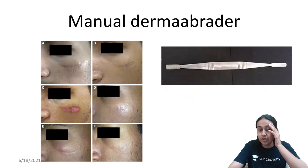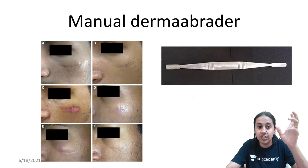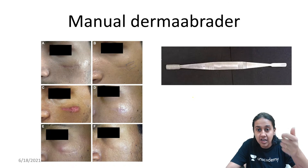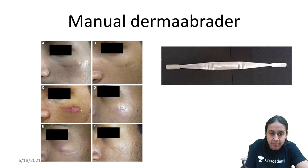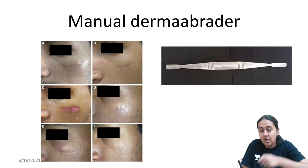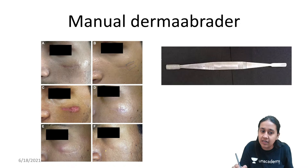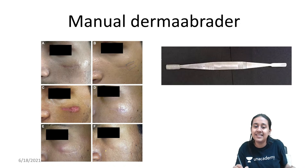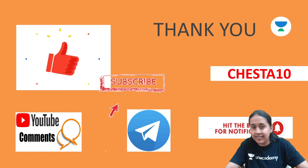Lastly, we have the manual dermabrader. In vitiligo surgery, you need to create a fresh recipient area. You use the dermabrader by rubbing it onto the lesion until there is pinpoint bleeding. After that, you place the graft so that it will be accepted very well.